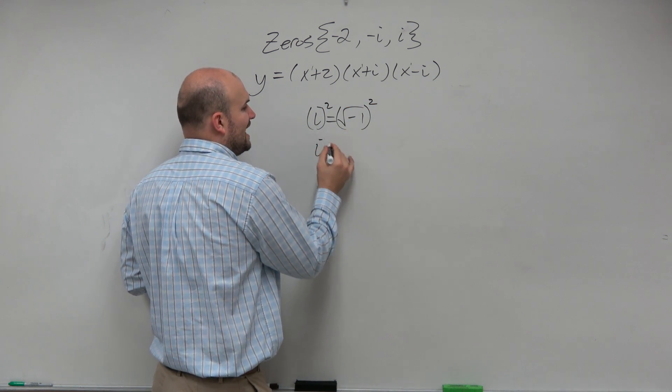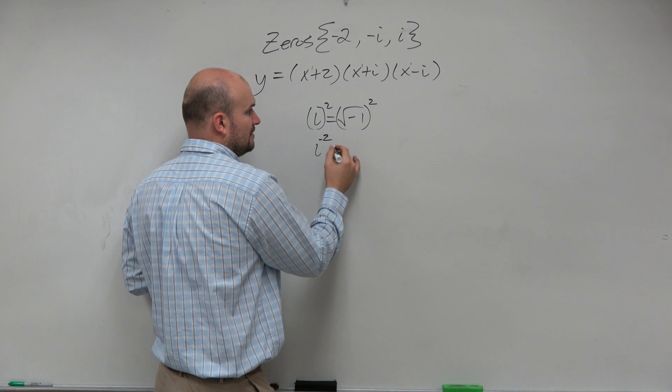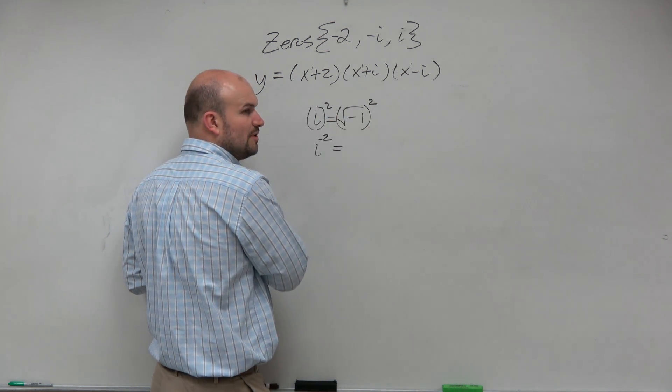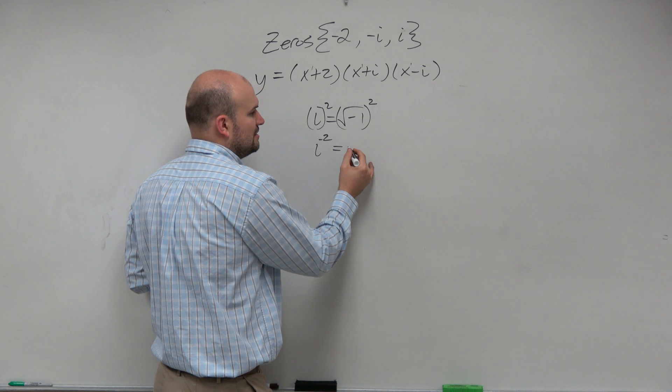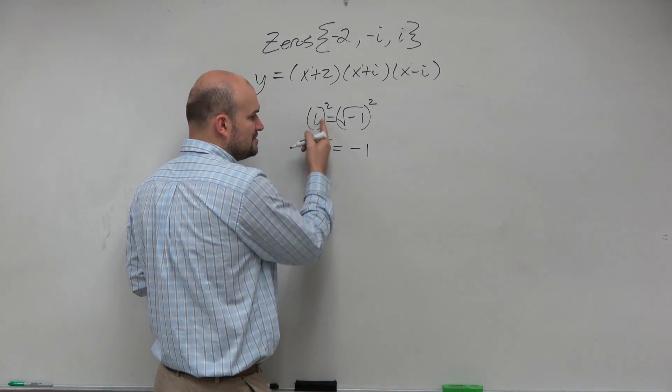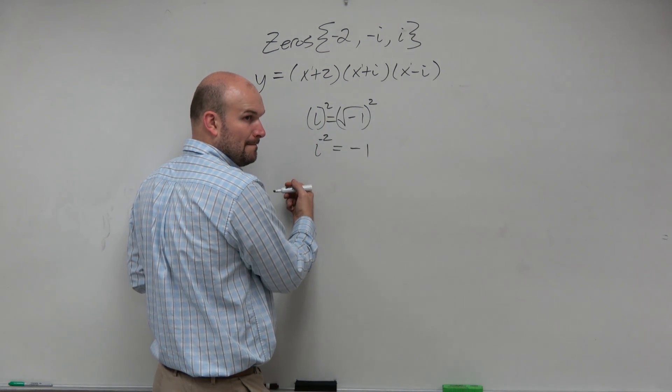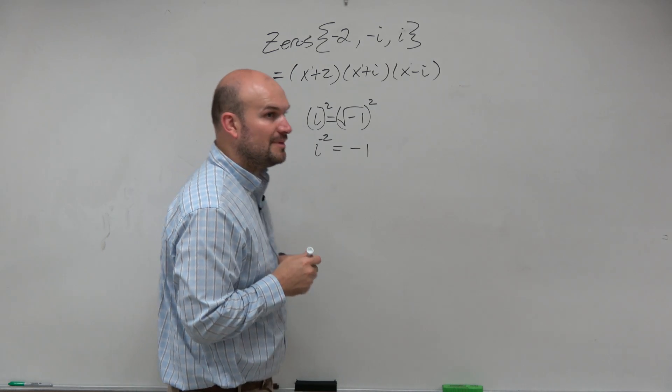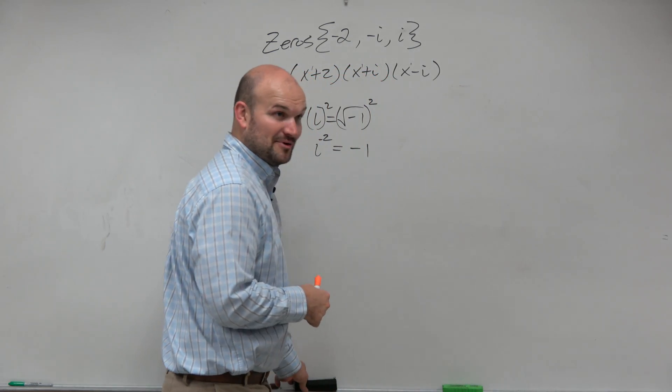Well, what's the square root? What's the square root squared? And i squared is just negative 1. So i squared is equal to negative 1. That's from Algebra 2 days. Remember it.